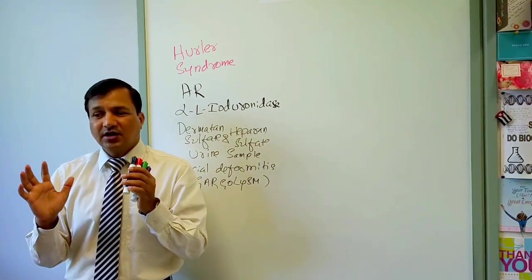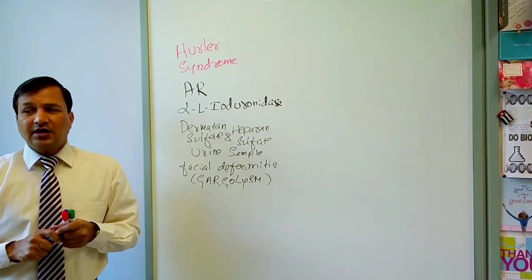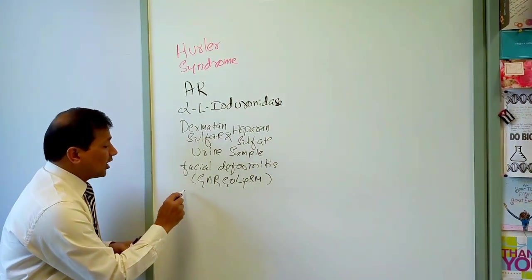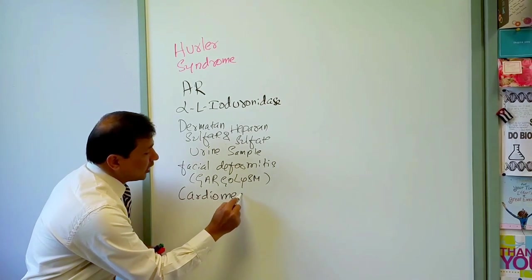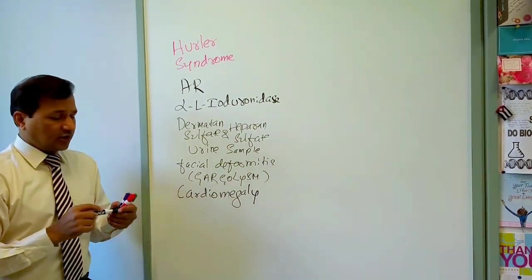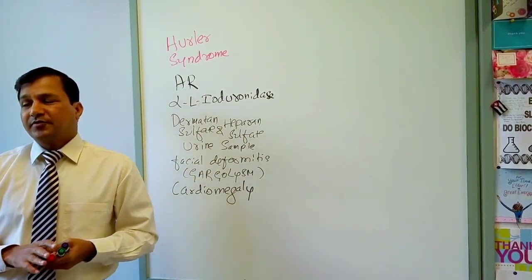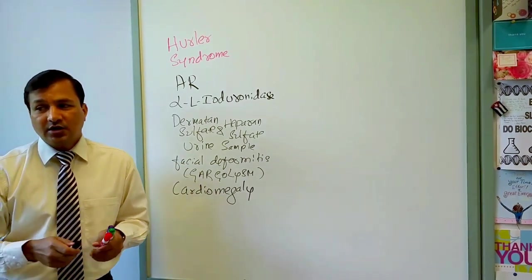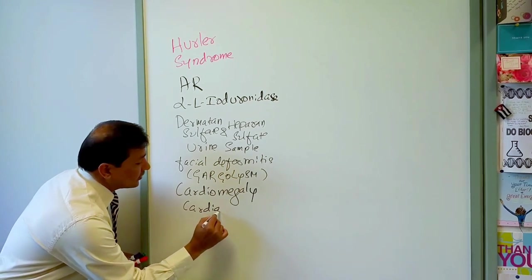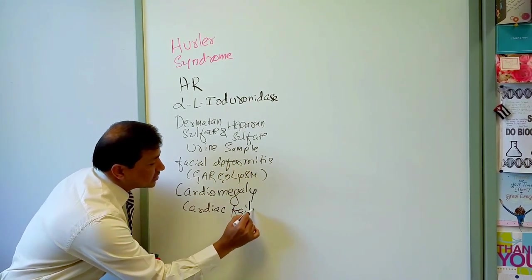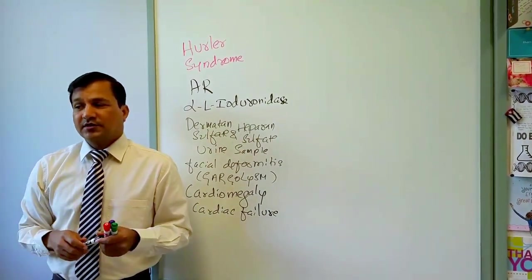Another important feature of Hurler syndrome is cardiomegaly — cardiac dilatation is present. Patients with Hurler syndrome die because of cardiac failure. This can be a question where you diagnose the case and are asked the cause of death: cardiac failure.